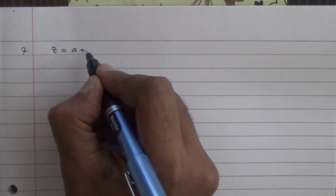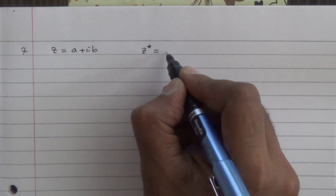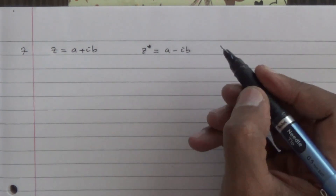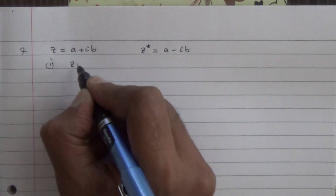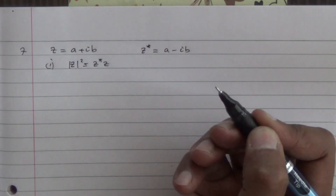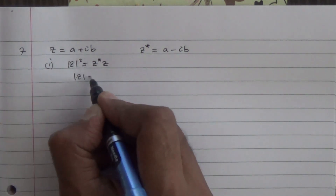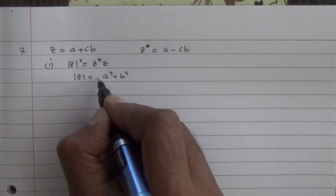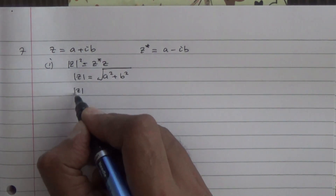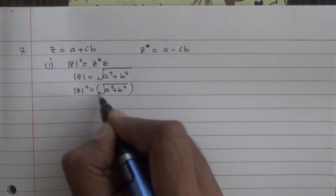Okay, let's do this. For the first part of question number 7, we have z equals a plus ib, and the conjugate of z is a minus ib. We should prove that the modulus of z squared is equal to the conjugate of z times z. What is the modulus of z? The modulus of z is going to be equal to the square root of a squared plus b squared. Therefore, the modulus of z squared is equal to a squared plus b squared, all of that squared.